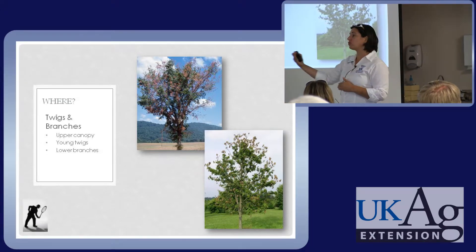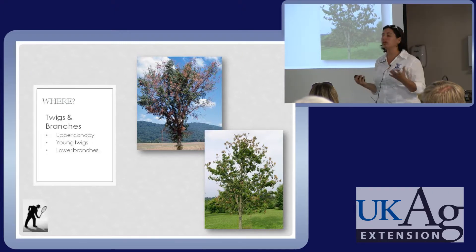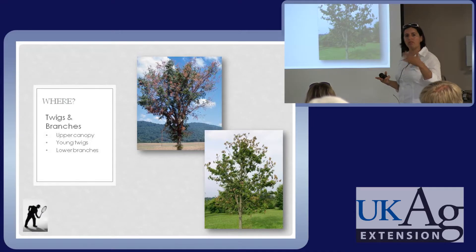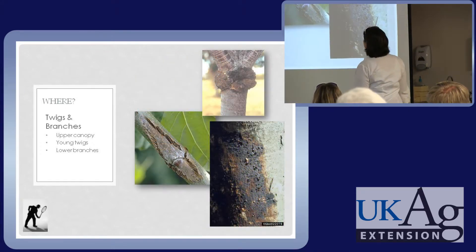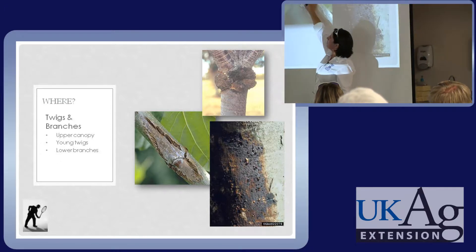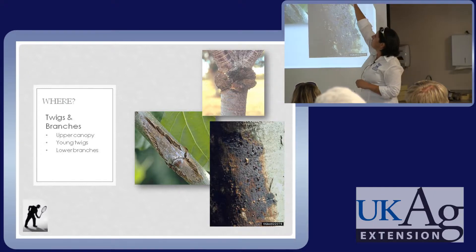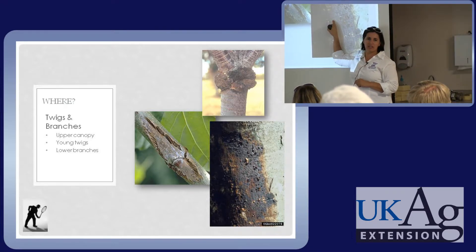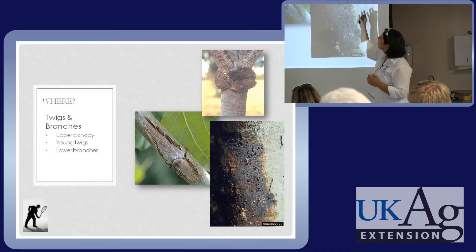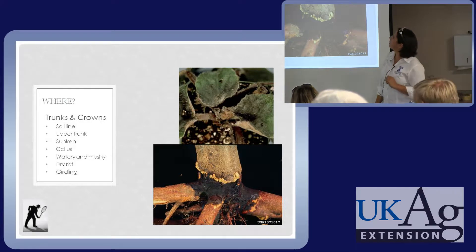Overall decline is often some kind of uptake issue — whether it's a damaged root system, a canker, crown rot, or mechanical damage like mower damage that can eventually lead to trunk rot. Twigs and branches are another key area: determine whether damage is just on the leaf, or whether you need to trace it back. Is there damage on the branches, or only on branches less than six inches in diameter? Is it young twigs, lower branches, or the upper canopy?